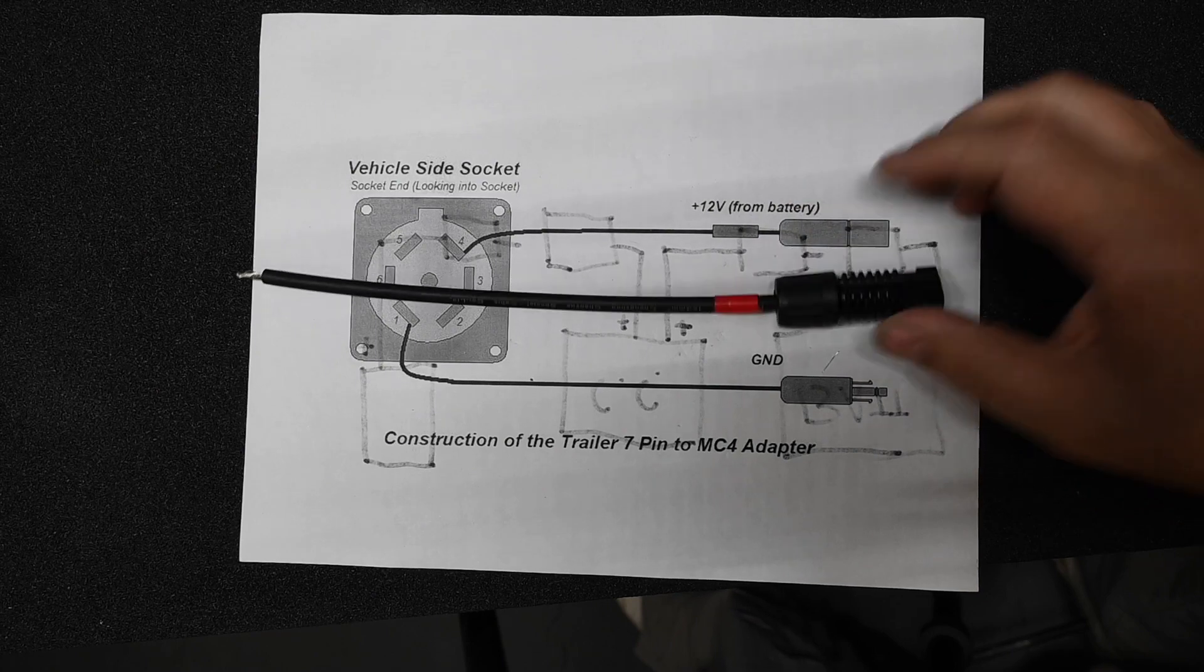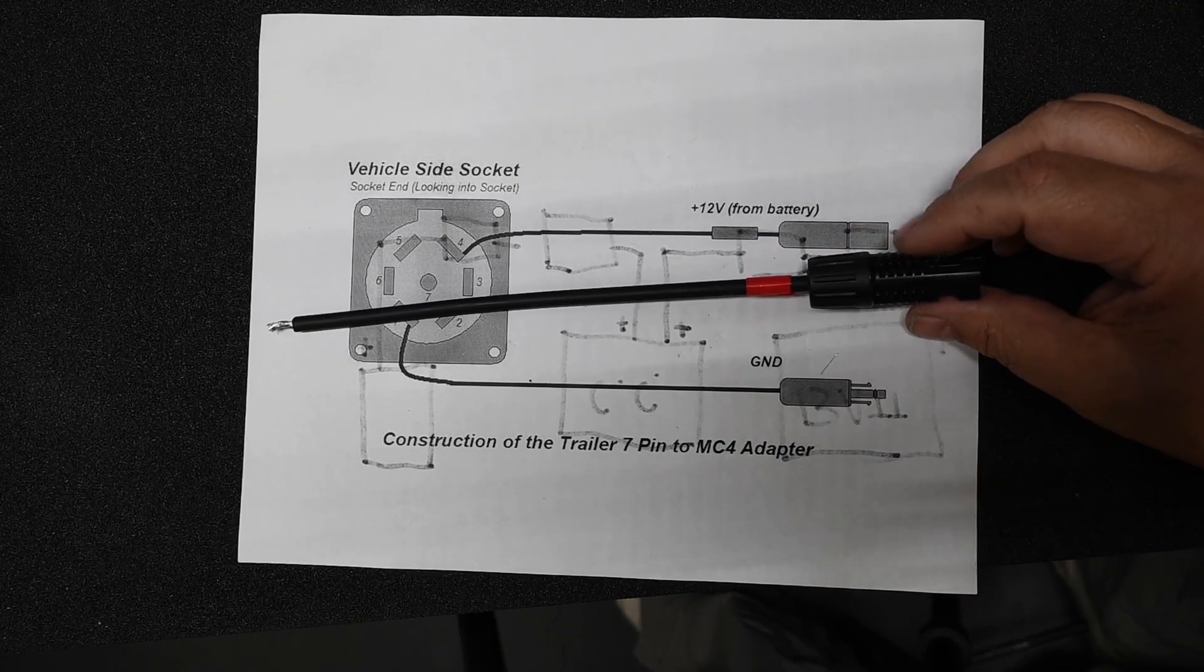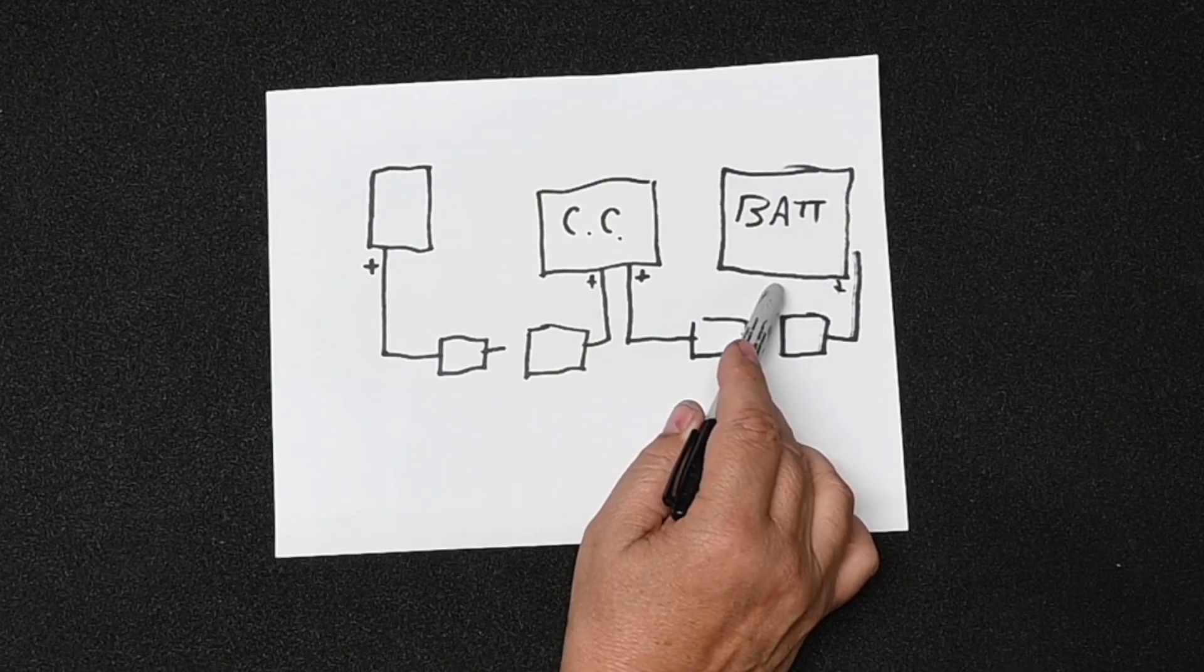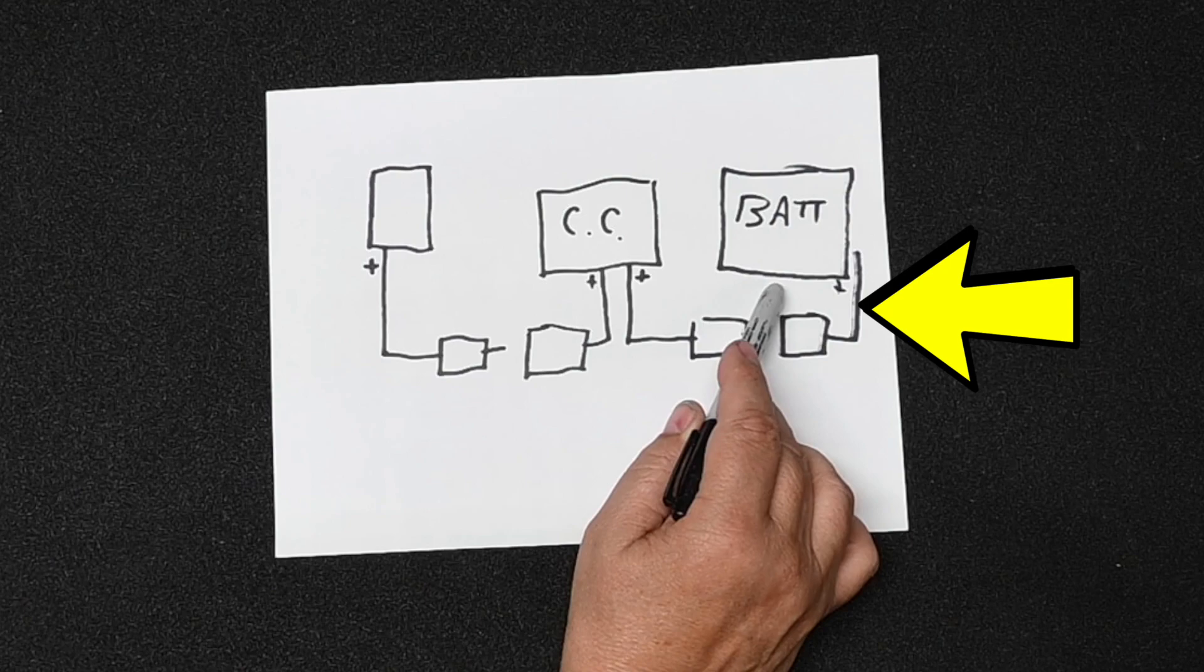And then, so what I like to do is to put a piece of red tape to help identify the positive side, which is actually the female connector. And the reason we're putting it on the female connector side is because this is the connector we're building right here, the positive connector from the battery.